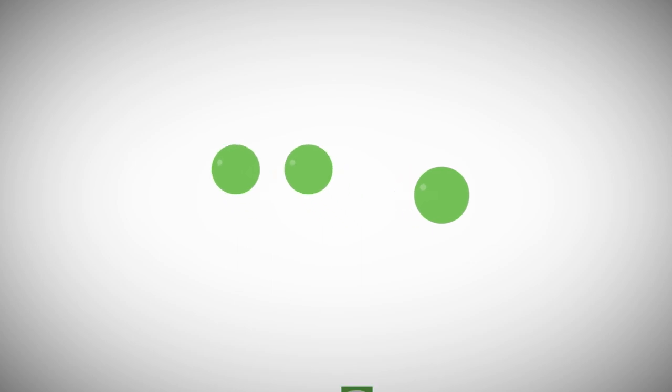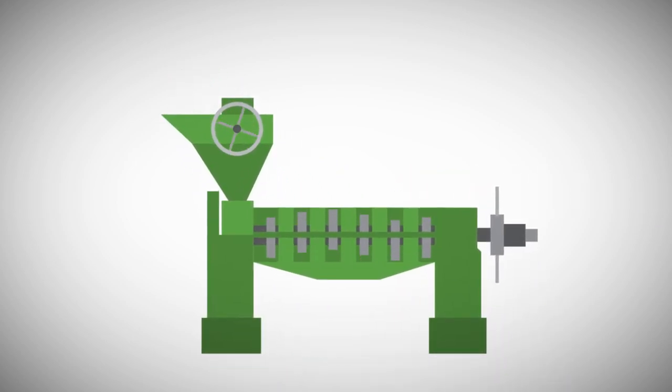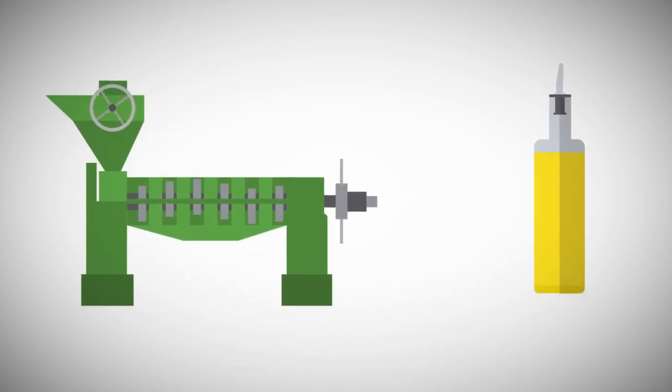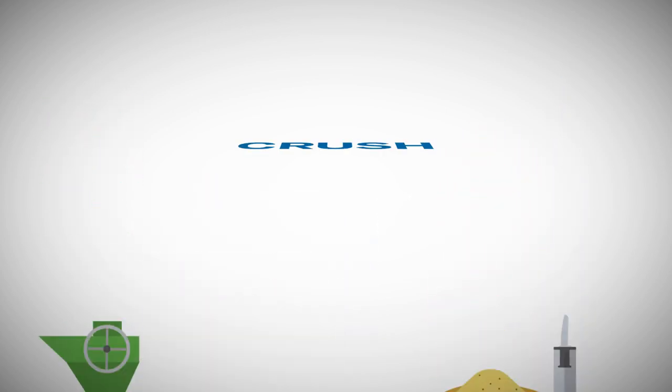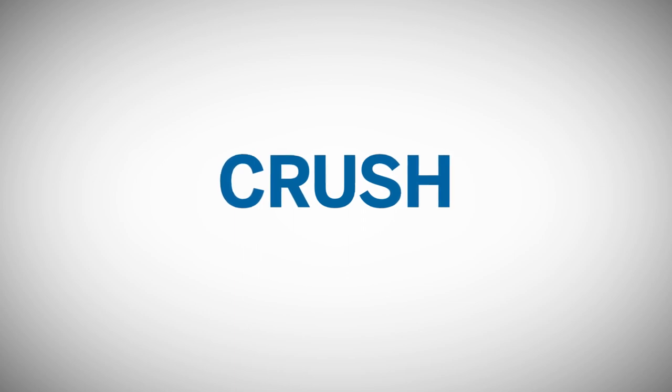About two-thirds of the total soybean crop is processed or crushed into soybean oil and soybean meal. The term crush refers to the physical process of converting soybeans into oil and meal byproducts.